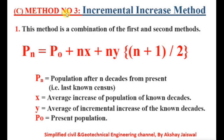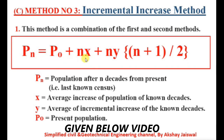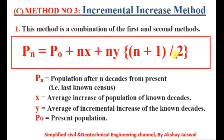Now we will see method number three — the Incremental Increase Method. This method is a combination of the first and second methods. The formula is given by: Pn = P0 + Nx + Ny × (N+1)/2, where Pn is the population after N decades from the present.